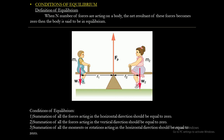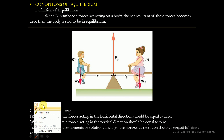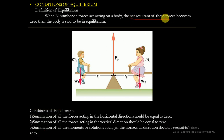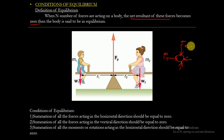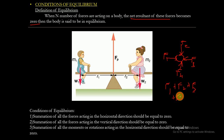Next, coming to the conditions of equilibrium: what is equilibrium? When n number of forces are acting on a body, the net resultant of these forces becomes zero. When n number of forces are acting on a body, the summation of all these forces must be equal to zero.